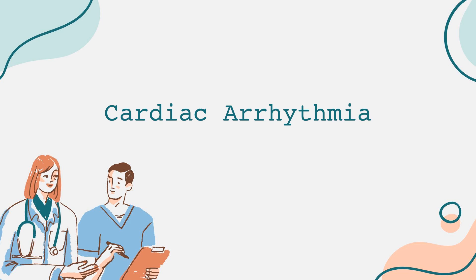Arrhythmias are abnormalities in the heart's rhythm. They can manifest as a heartbeat that is too fast, too slow, or irregular. The heart typically generates electrical signals that dictate the rhythm of each heartbeat. When these signals are disrupted, various types of arrhythmias can occur.